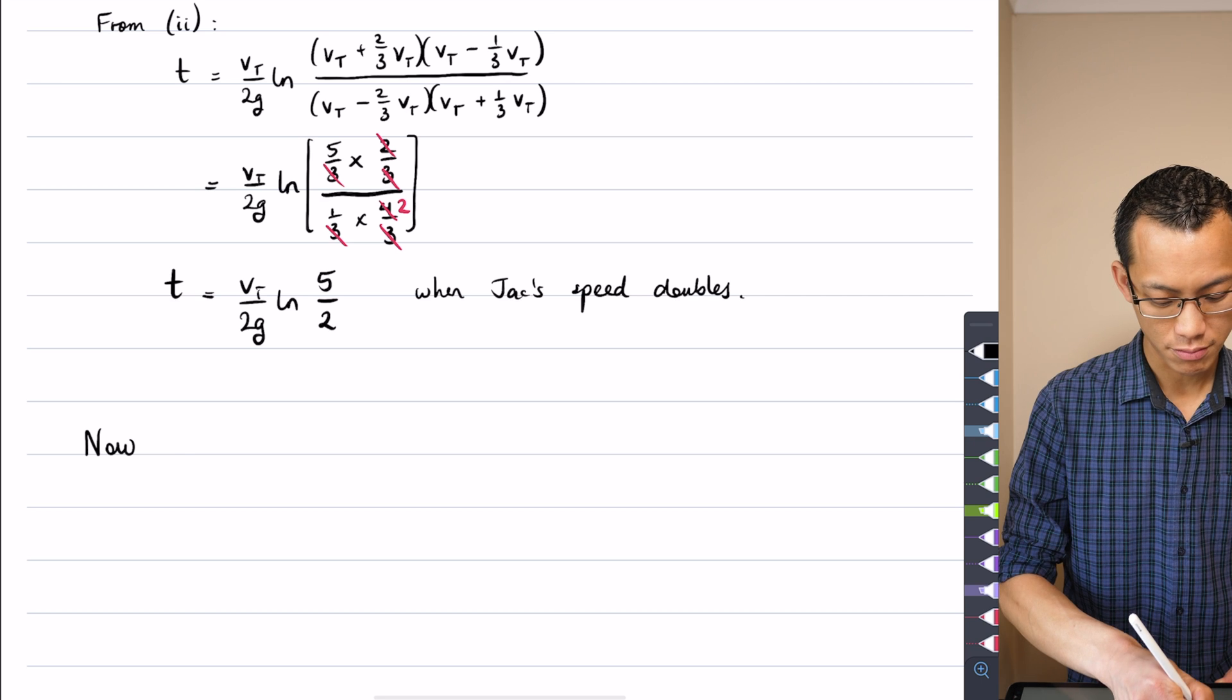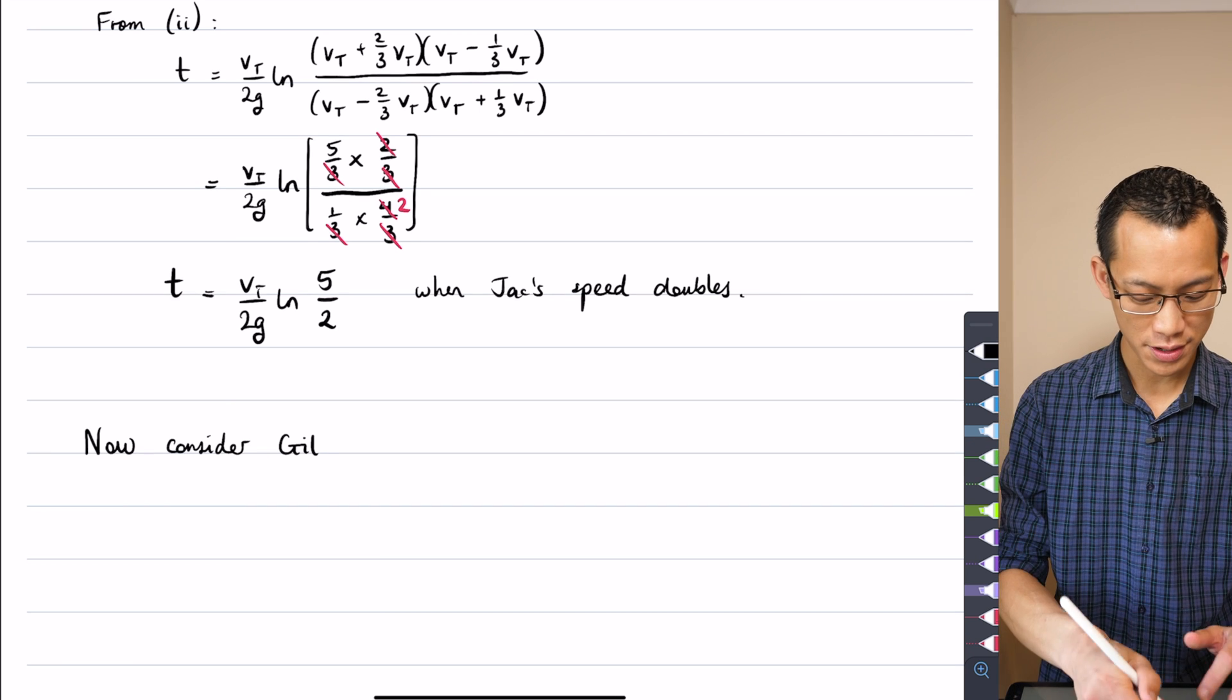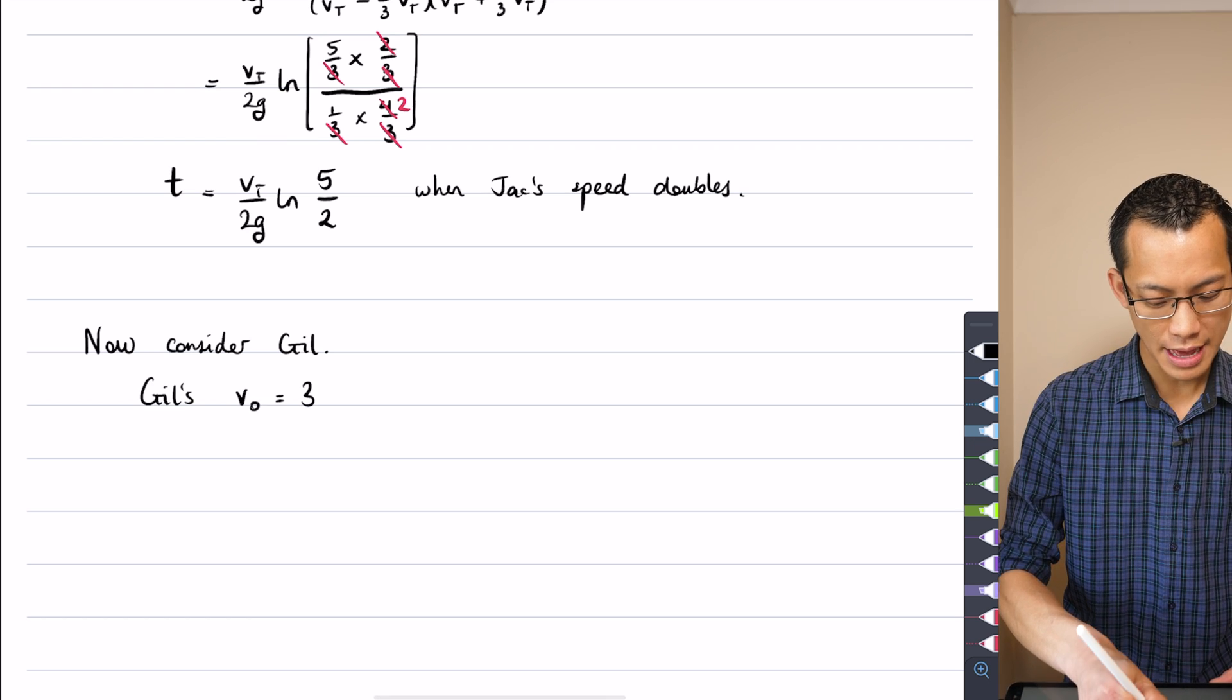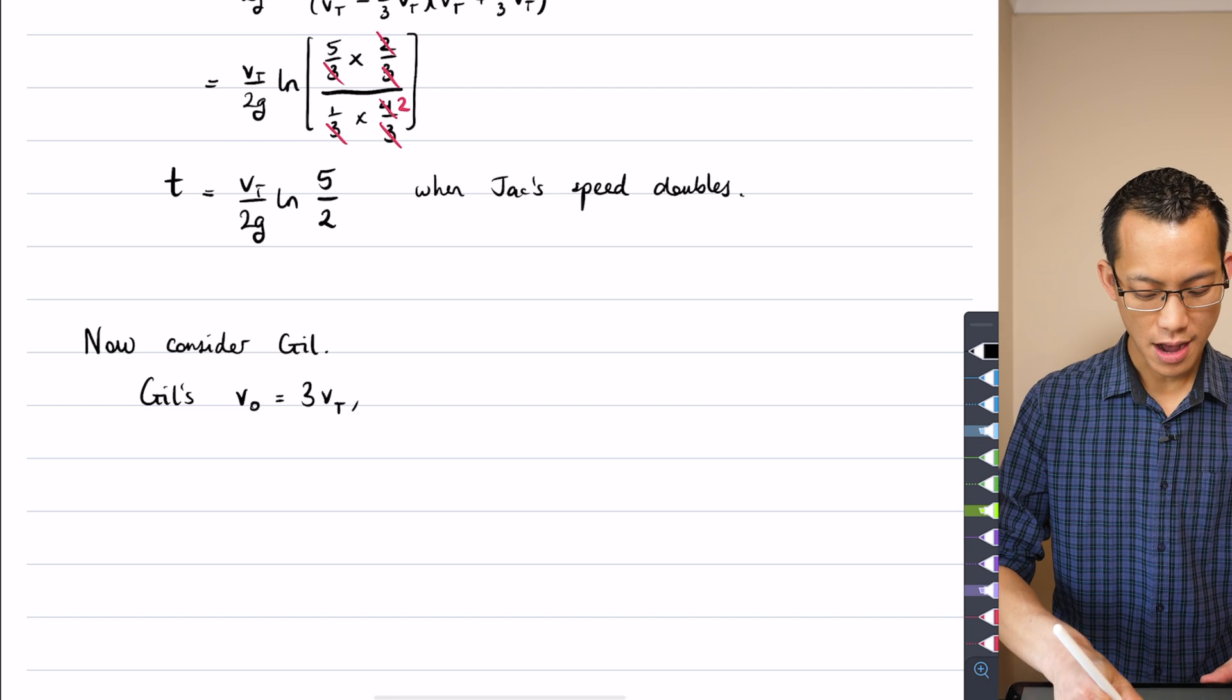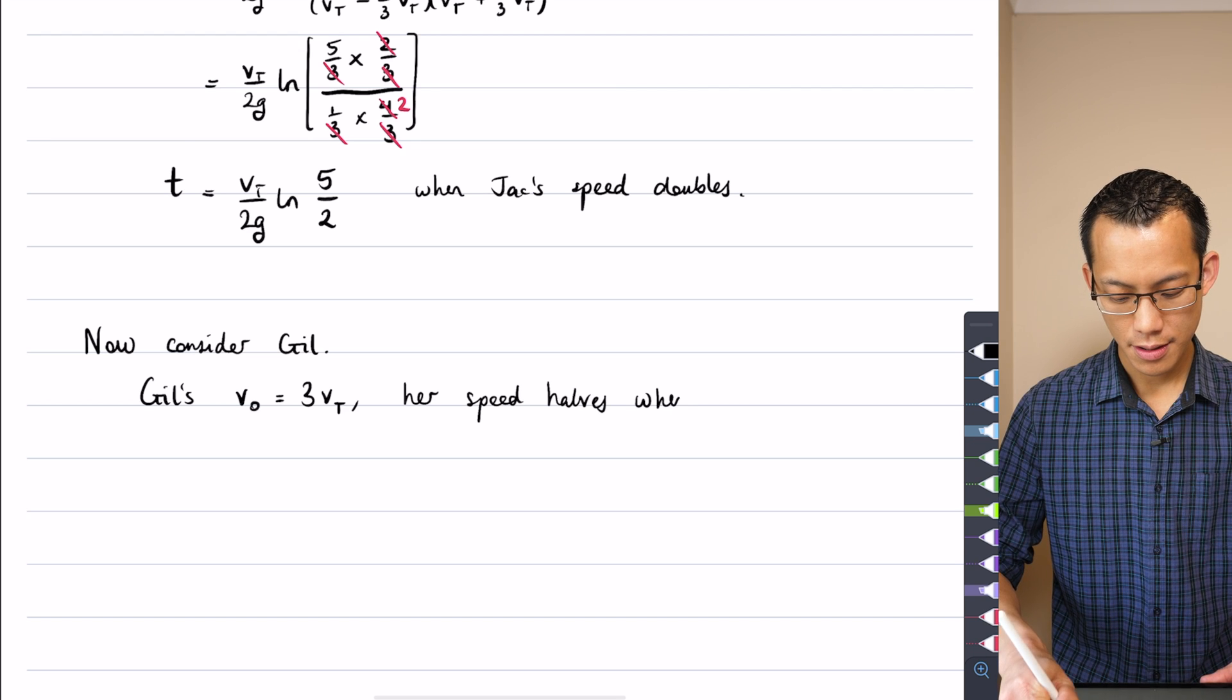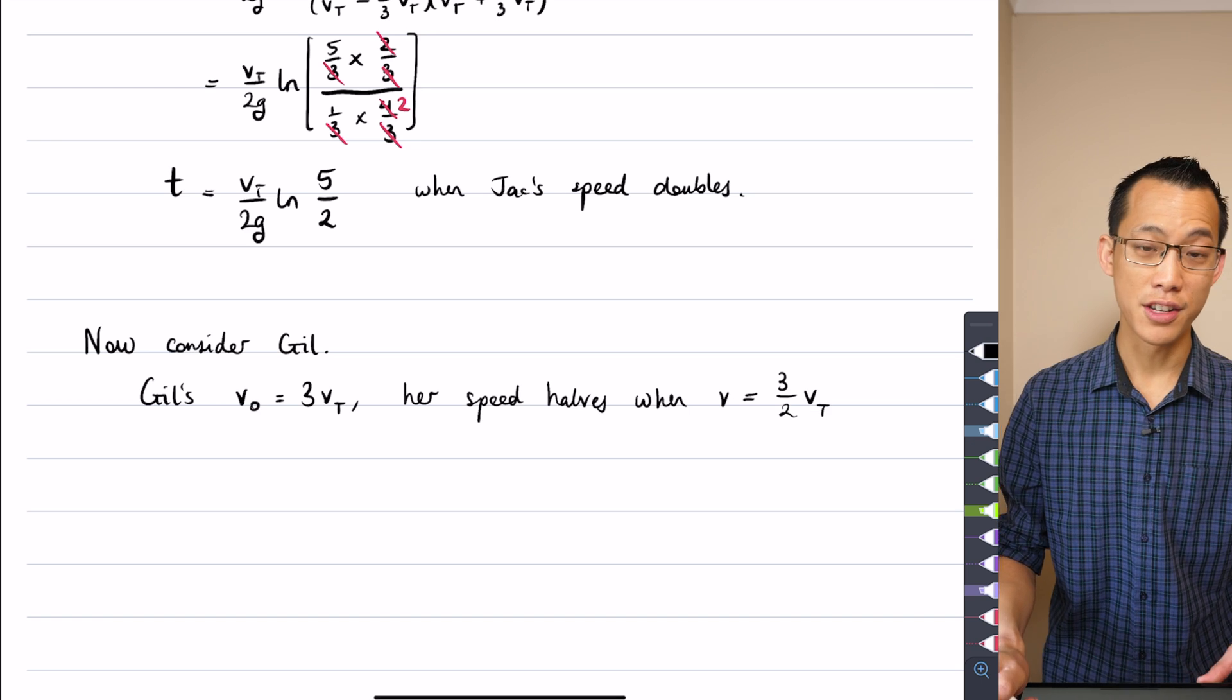I'm just going to rehearse the same argument that I made before. Her V0 is different. It's triple that terminal velocity, so her speed halves when it's half of that. So that's her V0, her speed halves when her V is equal to, instead of 3, it'll be 3 over 2 times the terminal velocity.